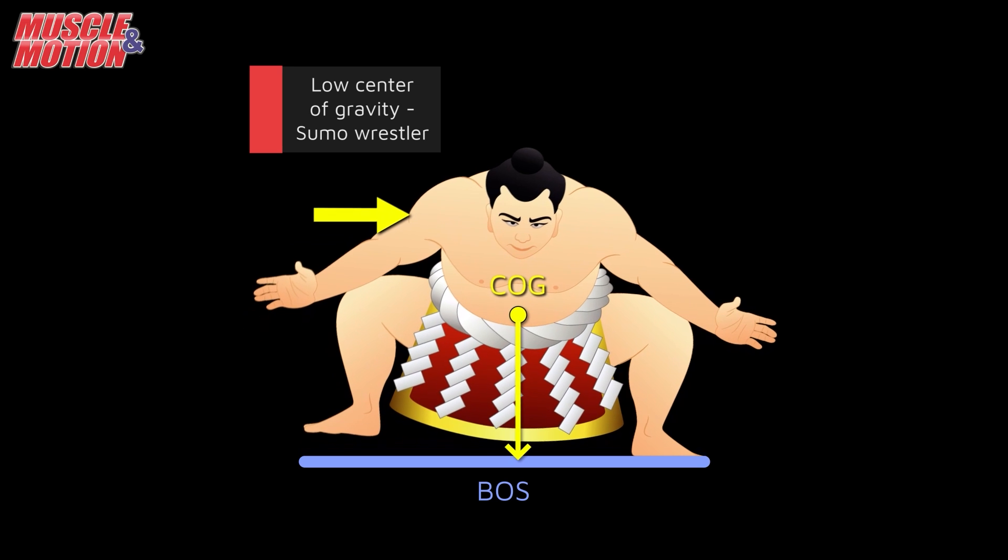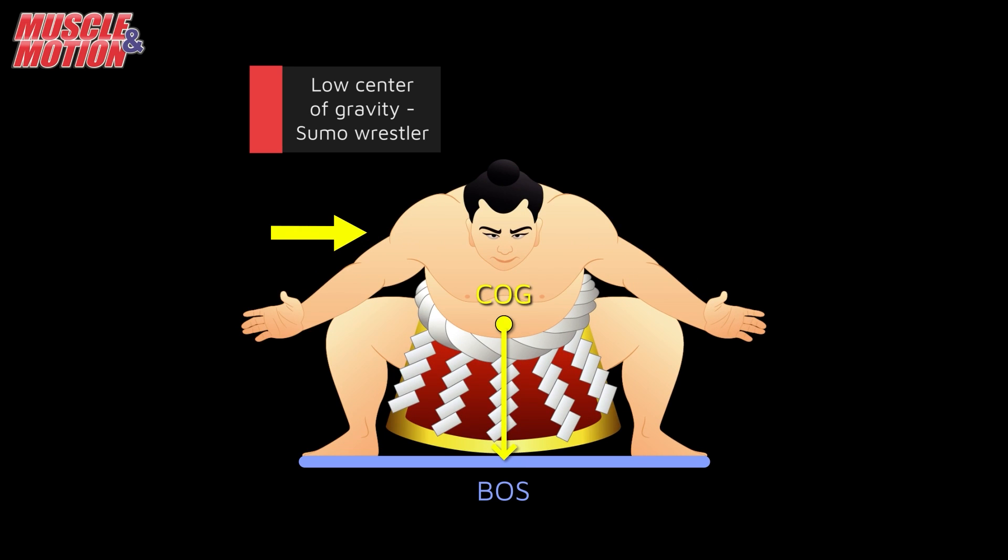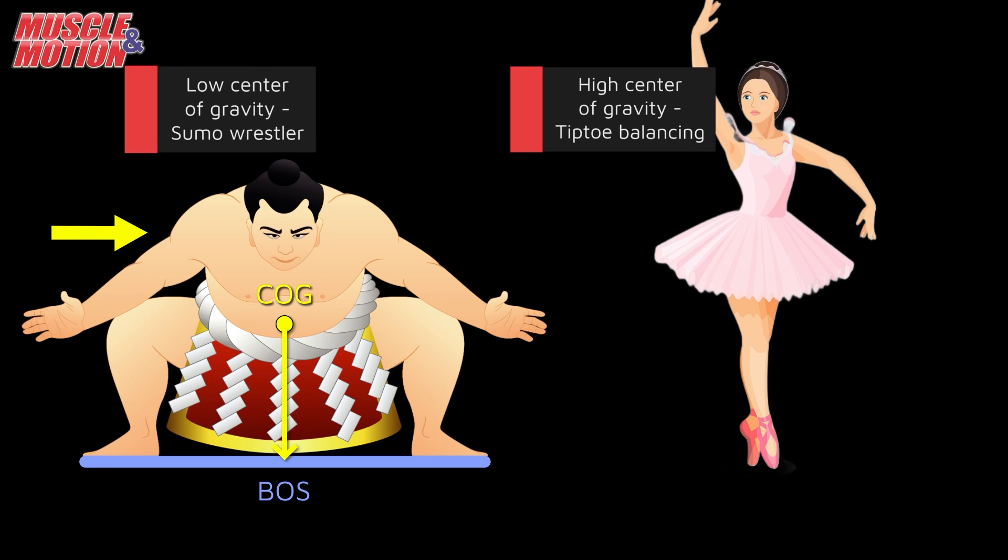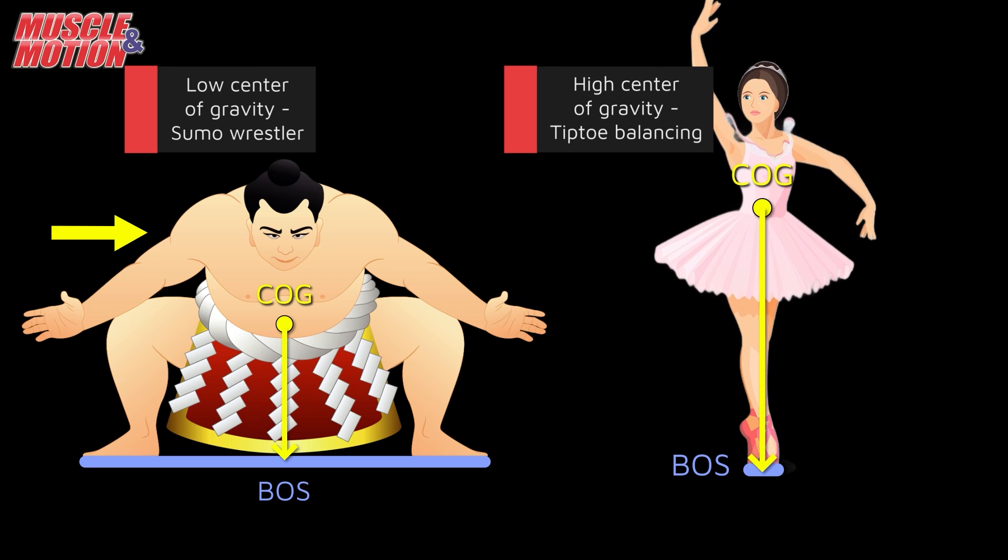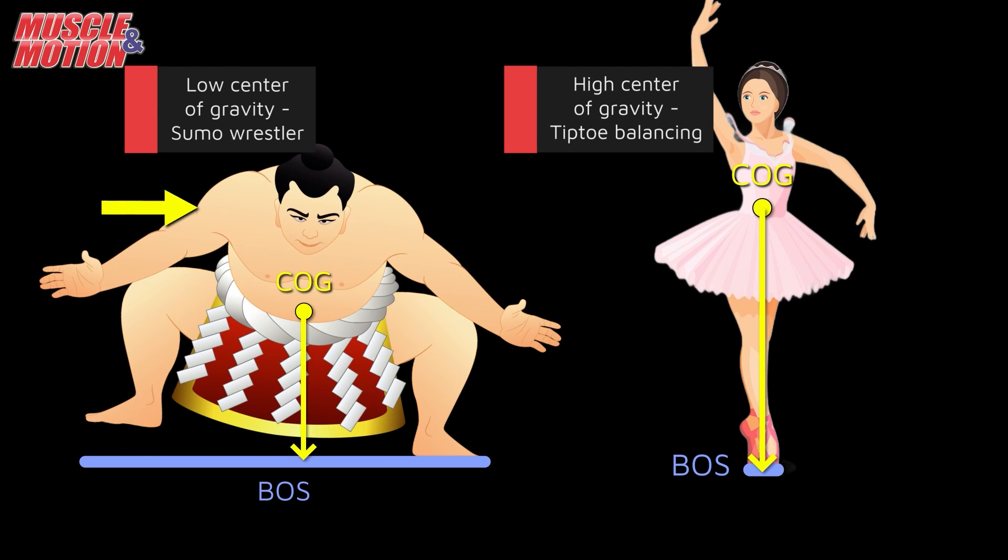High center of gravity: tiptoe balancing. When balancing on tiptoes, the center of gravity is much higher above the ground, making it prone to instability. Maintaining stability requires constant effort and control. Balancing on tiptoes vividly demonstrates how a high center of gravity increases instability and the risk of toppling over compared to a lower center of gravity stance.